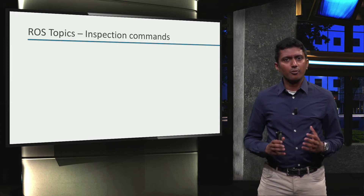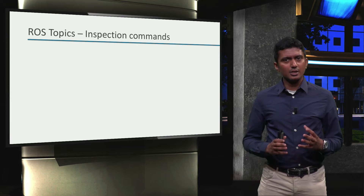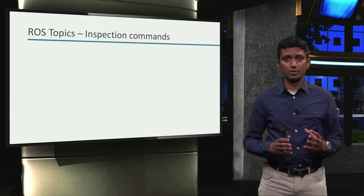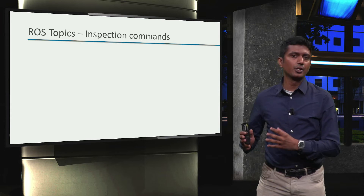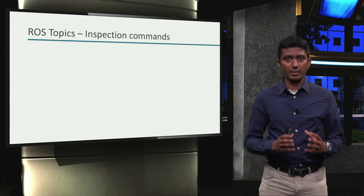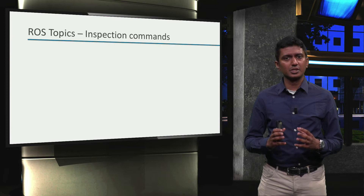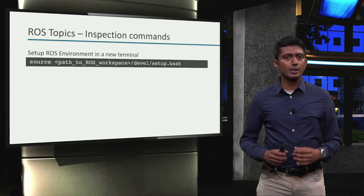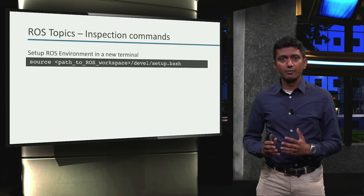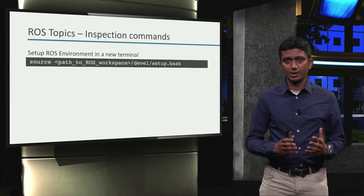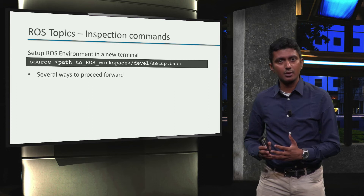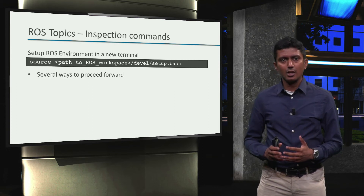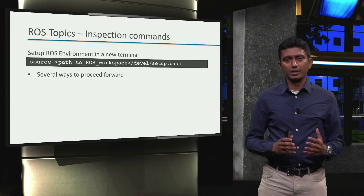With this basic understanding of what topics are, let us now focus on a few commands that help us find more information about topics that are being exchanged between nodes. These commands are very similar to those we studied in the previous module with inspecting nodes. When we start a new terminal, we set up the ROS environment by sourcing the workspace setup files. We will learn three commands that help us understand what data is being exchanged between the different nodes.